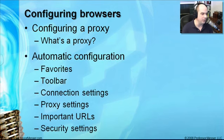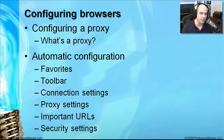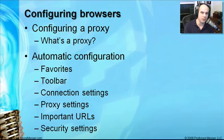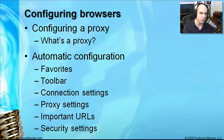There are a number of configurations we can do. One is to set a configuration automatically that goes out and finds the information it needs. An automatic configuration will find favorites, toolbar settings, connection settings, proxy settings, important URLs, and all the security things you would need. This is great in a large environment — it means there's nothing you have to configure on the local machine. And if you ever need to add something to the favorites, you add it in one place and the next time that machine goes out to gather those automatic configurations, it gathers the extra favorite.